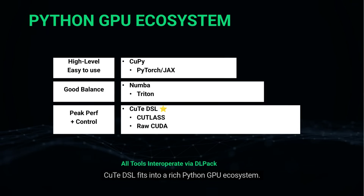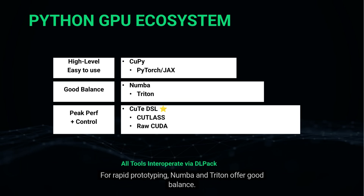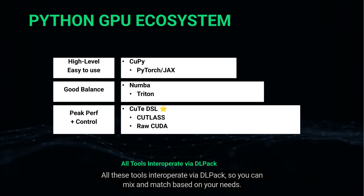CuTe DSL fits into a rich Python GPU ecosystem. For high-level operations, use CuPy or framework built-ins. For rapid prototyping, Numba and Triton offer a good balance. For peak performance with explicit control, CuTe DSL and Cutlass C++ deliver. All these tools interoperate via DLPack, so you can mix and match based on your needs.